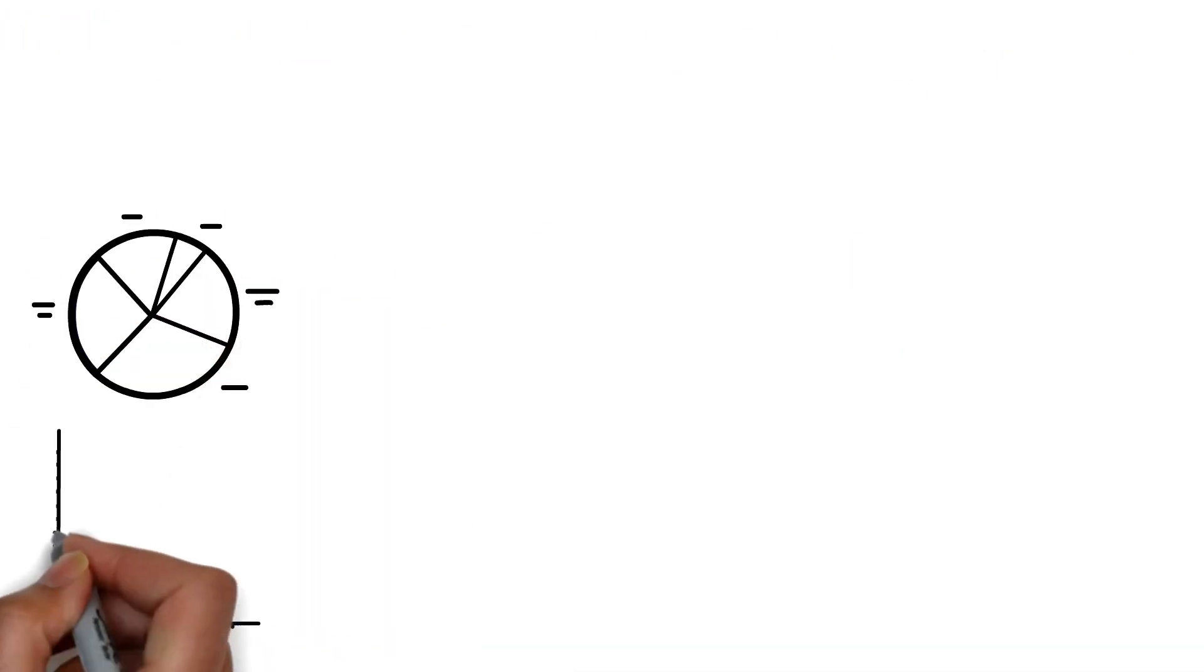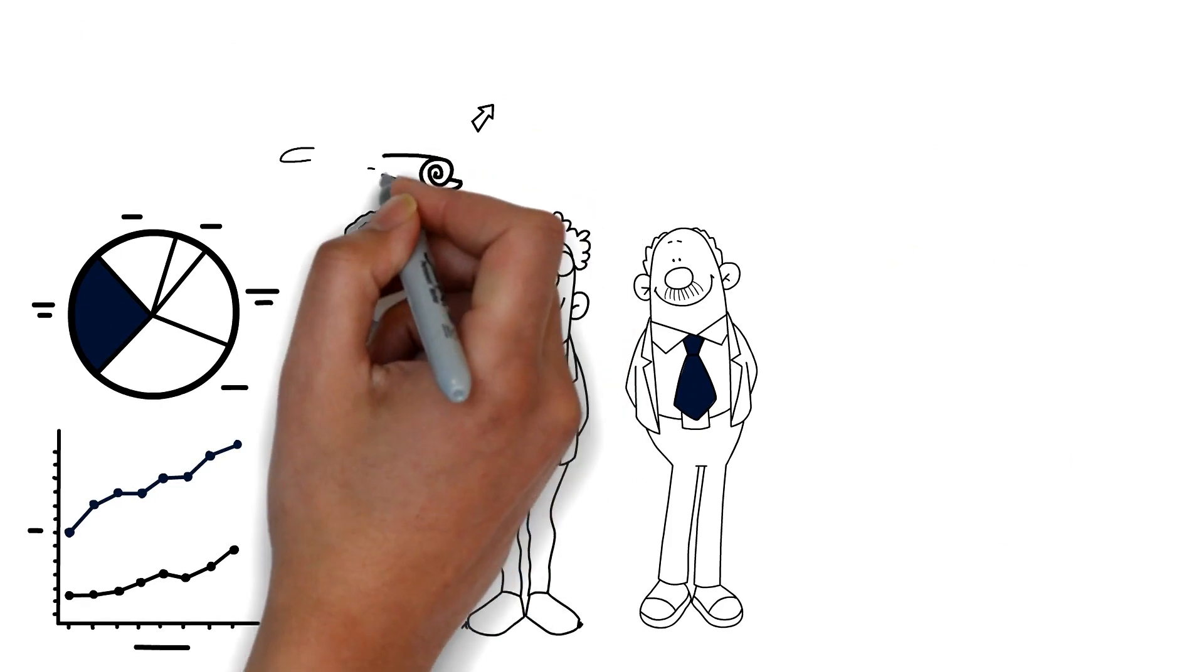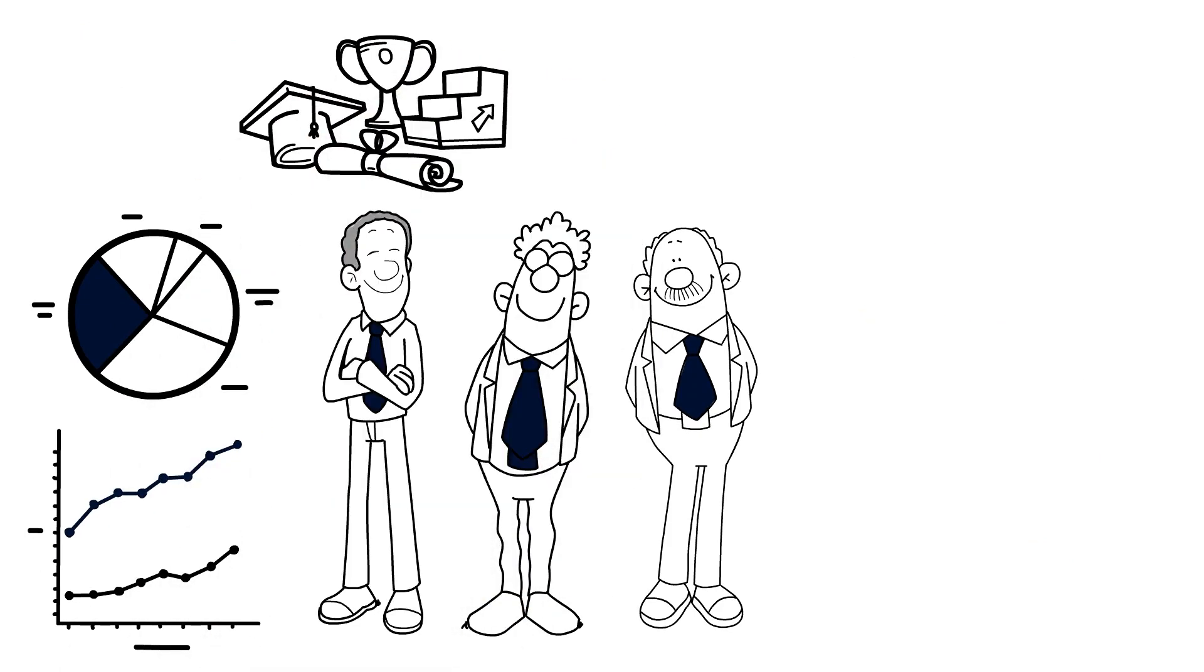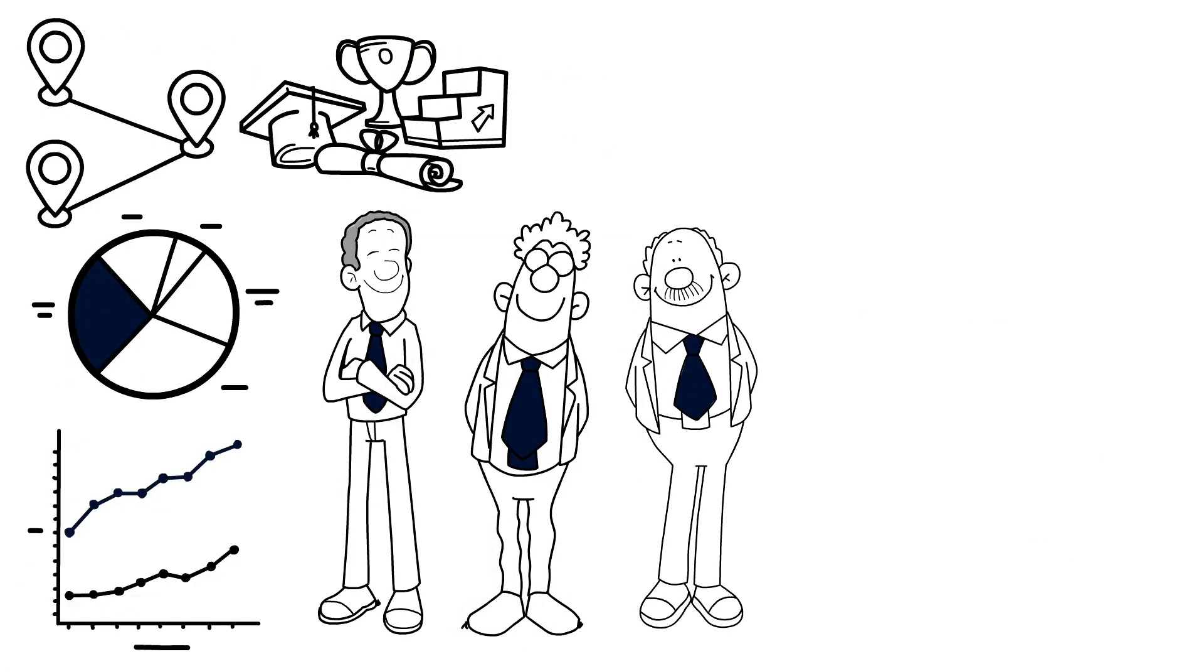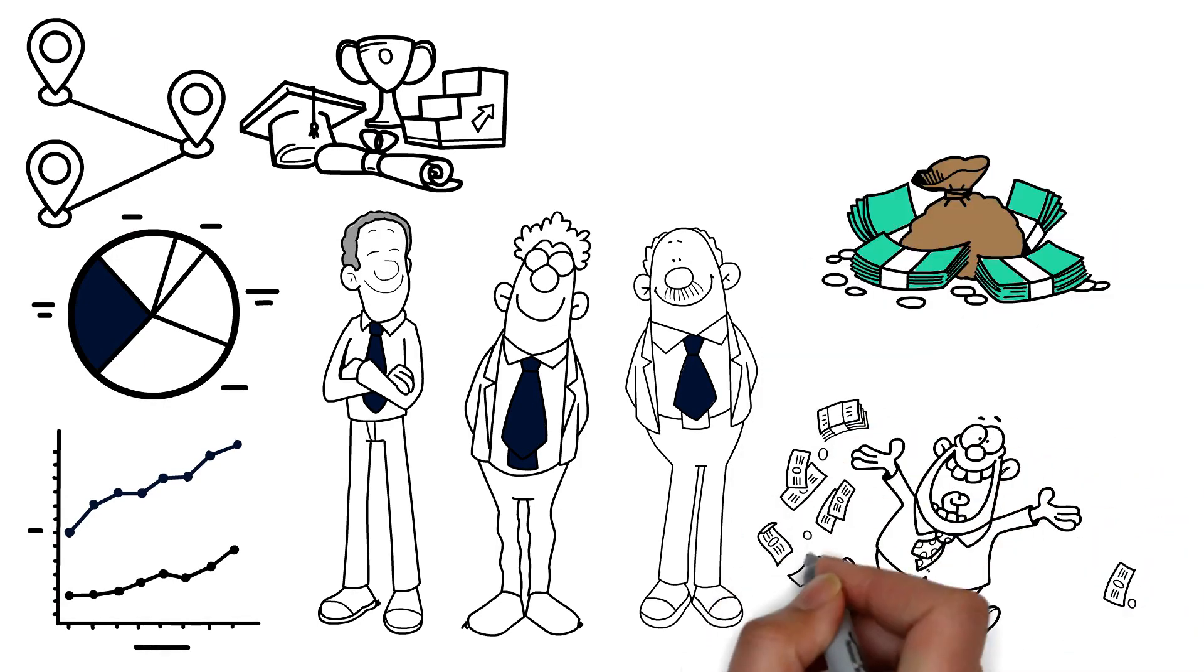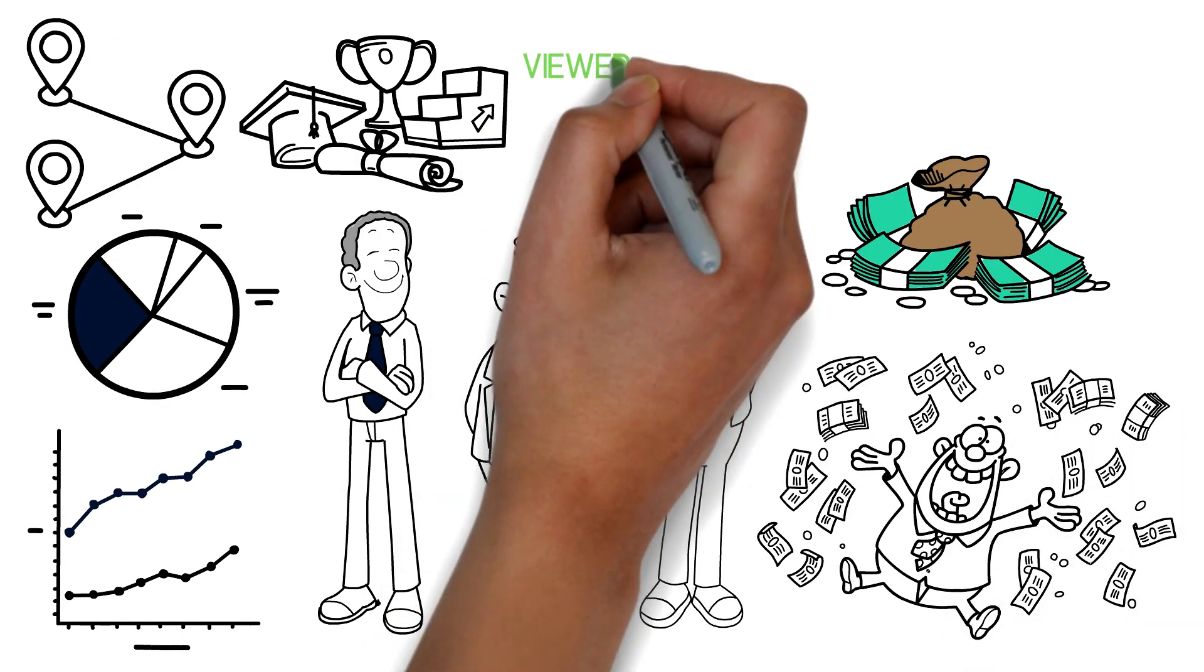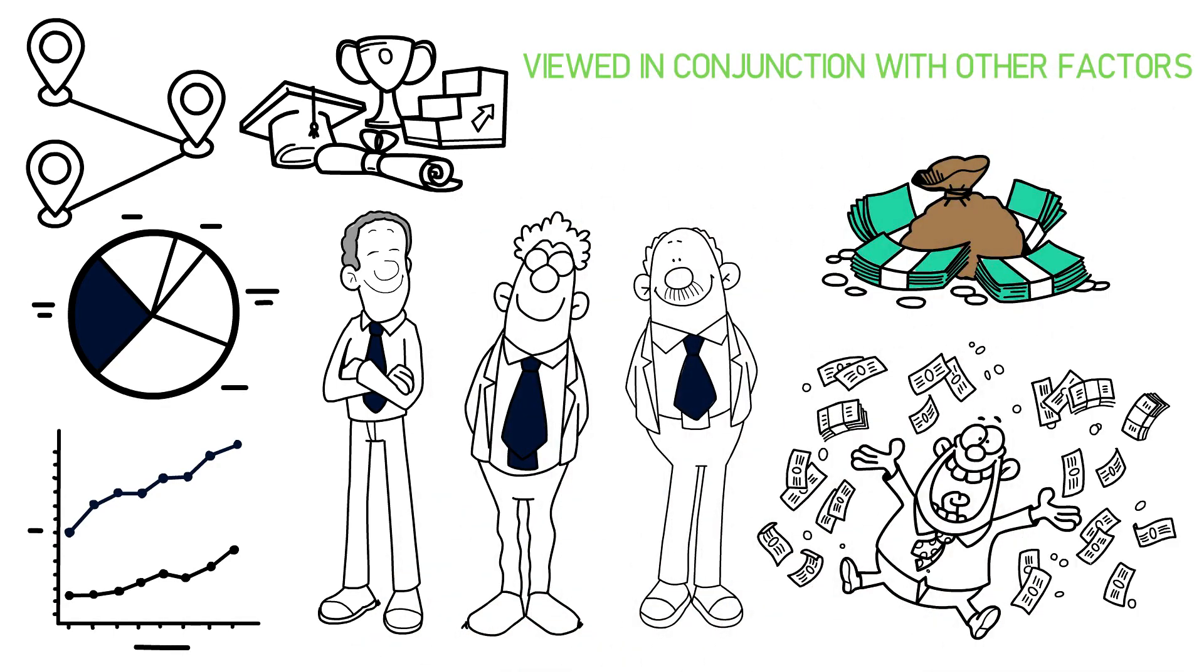Of course, it's important to note that these are just averages and there are significant variations within each age range. Factors such as education level, career path, and geographic location can all impact someone's net worth. Additionally, it's important to remember that net worth is just one metric of financial success and should be viewed in conjunction with other factors such as income, debt levels, and financial goals.